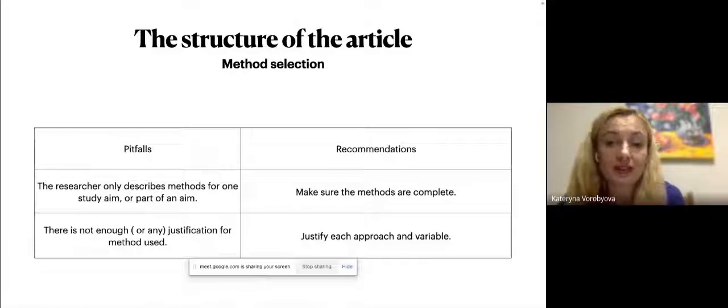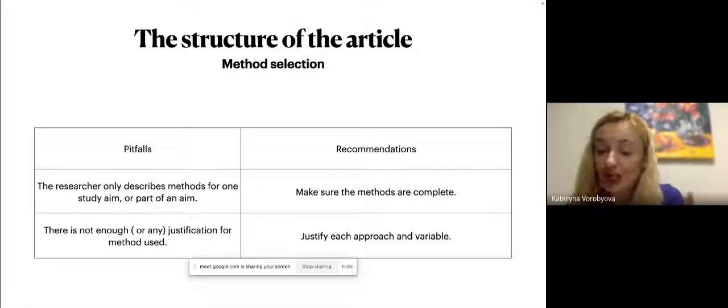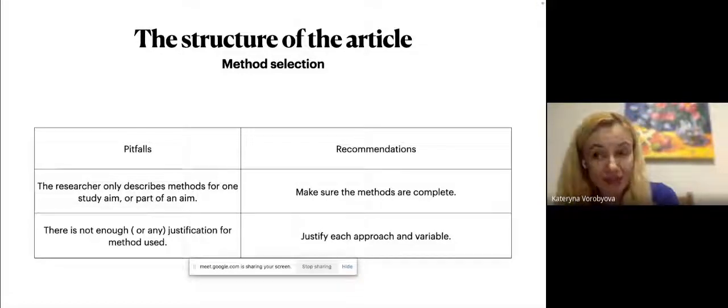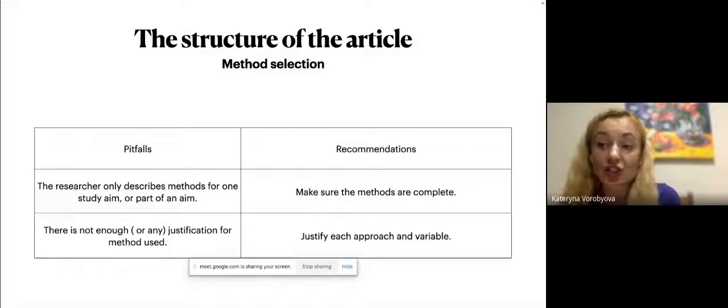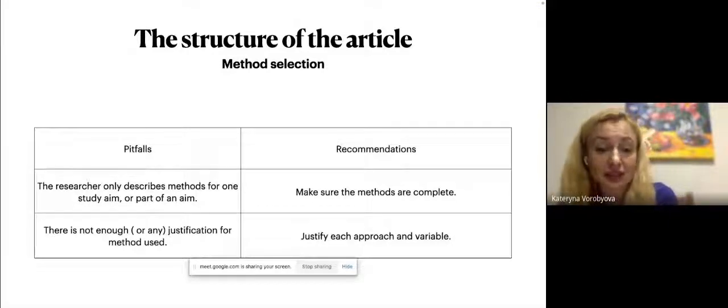So after introduction, most of the researchers do the method section. So the purpose of the method section is actually twofold. The first is to explain how the study was done in enough detail to enable the replication and to provide enough conceptual details to enable readers to understand and further to interpret the results. And in general, the essential elements of the methods sections, which is a description of setting the participants, the study design, timing, as I mentioned, researchers doing cross-sectional or longitudinal study. Recruitment or sampling design and data collection process, either it's quantitative or qualitative or dependent, independent variables, measurement of dependent, independent variables.